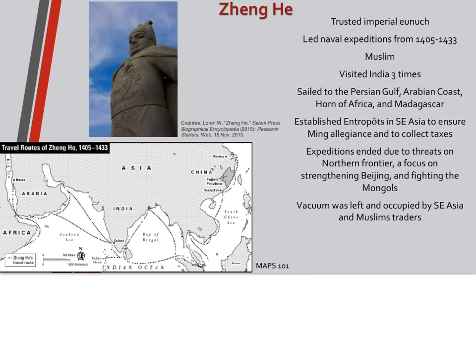Zheng He was a trusted imperial eunuch — a castrated male. He led seven naval expeditions from 1405 to 1433. He was a Muslim whose parents were famous for going on the Hajj. He himself visited India three times, sailed to the Persian Gulf, the Arabian coast, the Horn of Africa, and Madagascar. He established many outposts in Southeast Asia to ensure Ming allegiance and to collect taxes — not to conquer. His expeditions were ended due to threats on the northern frontier, a focus on strengthening Beijing and fighting the Mongols. A vacuum was left and occupied by Southeast Asian and Muslim traders — 'vacuum' in historical terms referring to a space from which everything has been removed.